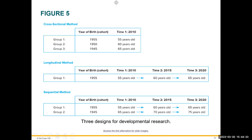In a cross-sectional design, you assess different age groups — cohorts born in 1945, 1950, 1955 — at one point in time. In a longitudinal design, you follow one cohort born in 1955 and assess them at ages 55, 60, and 65. In the sequential method, you follow two cohorts — born in 1955 and 1945 — and assess them every five years to see how they're progressing. This is considered one of the most robust methods.